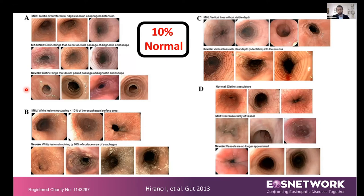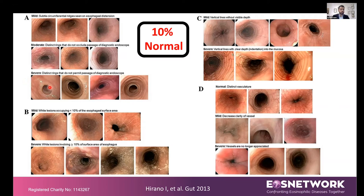What do we actually see in patients with EOE at the time of endoscopy? There are four main signs. The first is rings in the esophagus, which can range in severity from mild and subtle rings to more obvious, distinct rings that do not occlude the passage of the camera, and then more severe where we see them obstructing the passage of the camera — that would be the severe case.